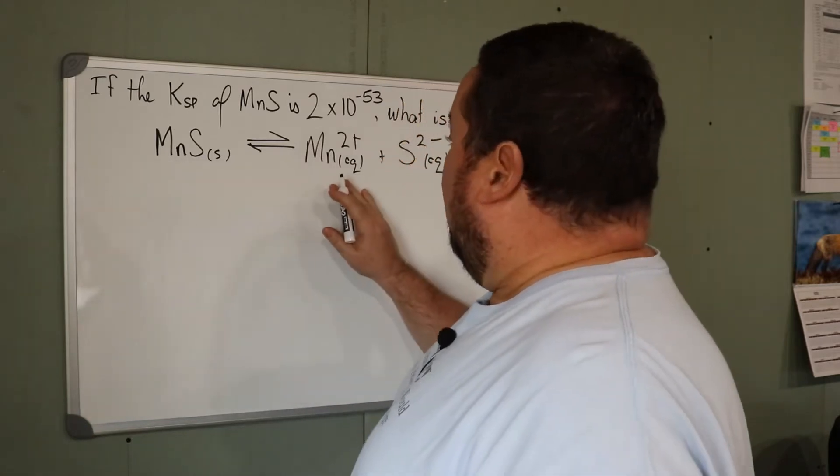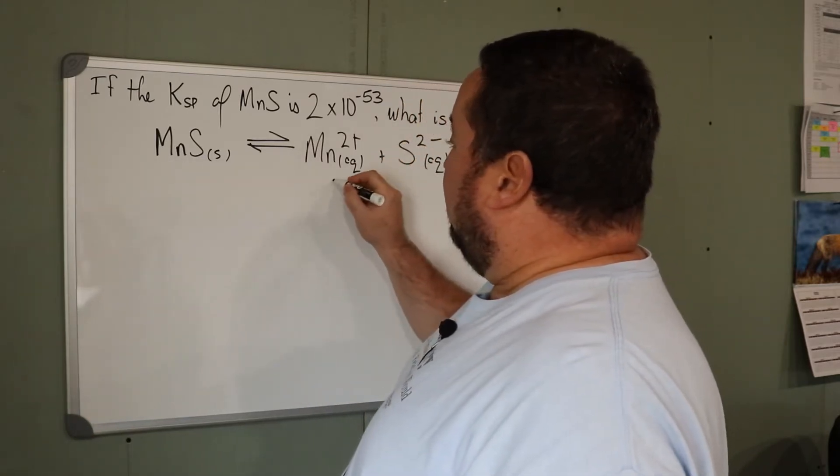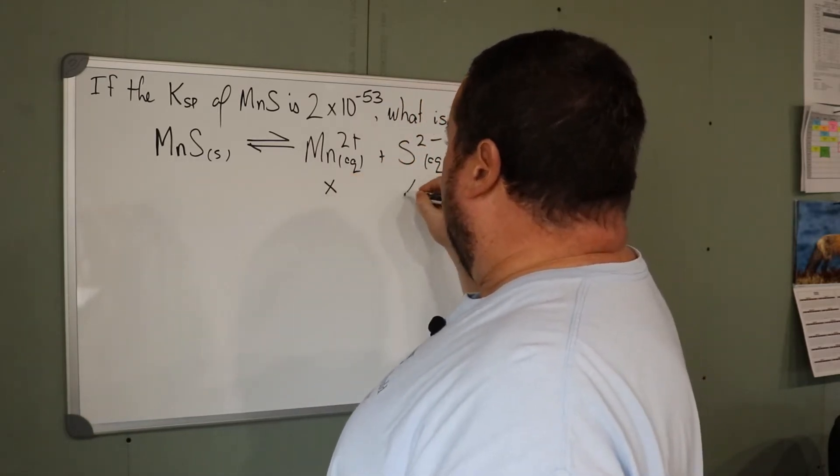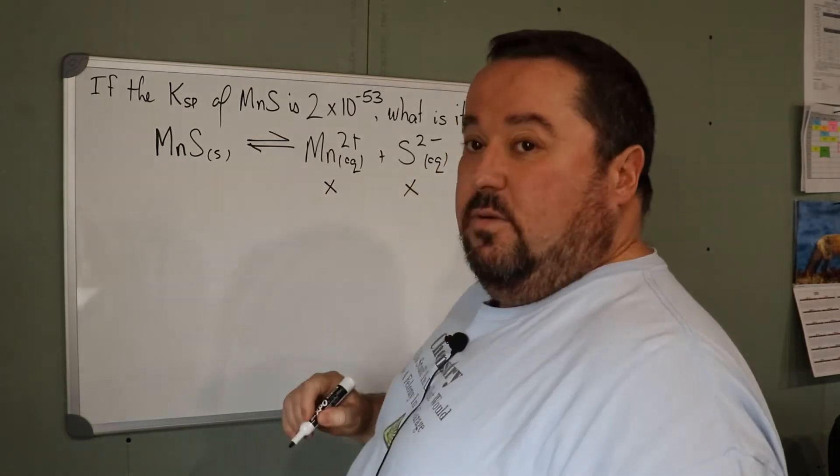Then what would the concentration of the two ions at equilibrium be? Because it's one-to-one, they would be equal, so they would be X and X.